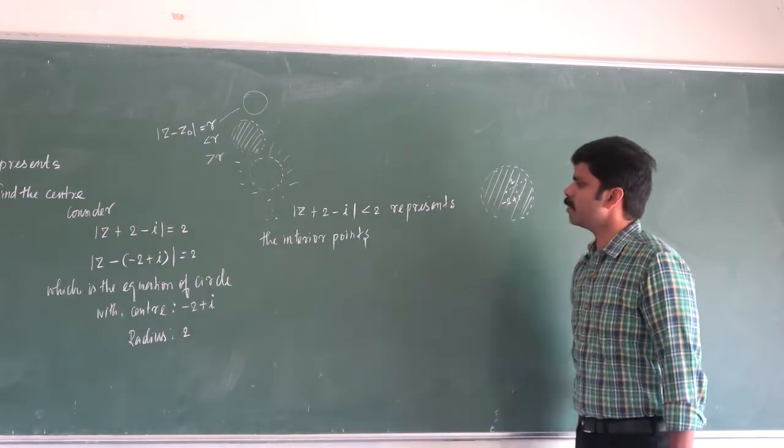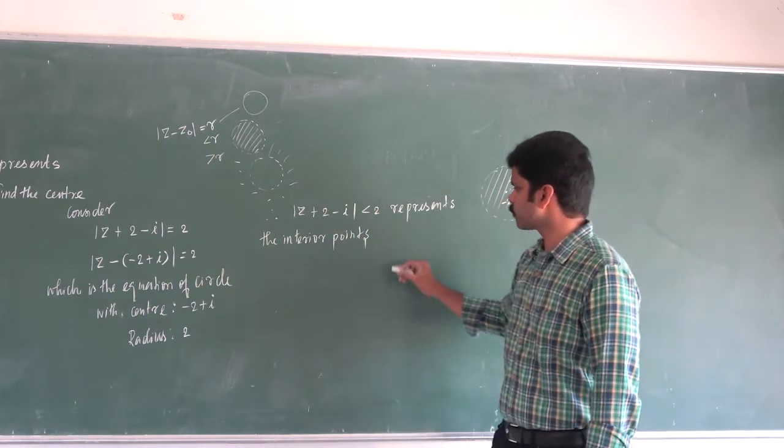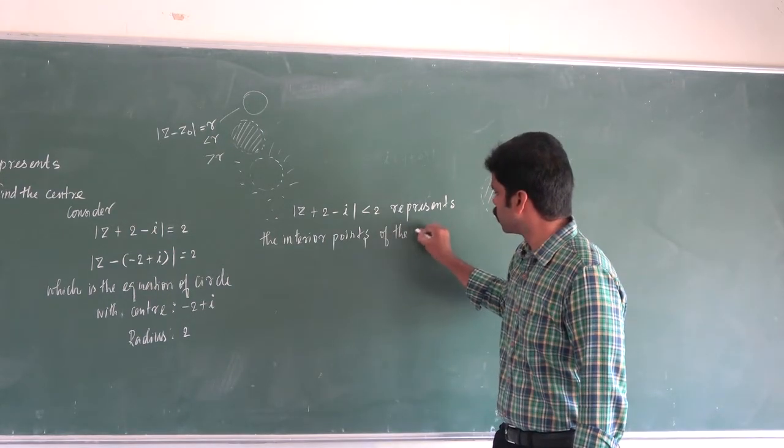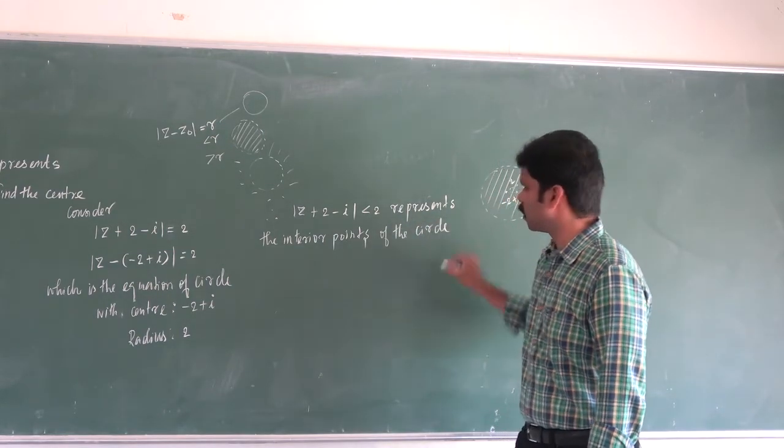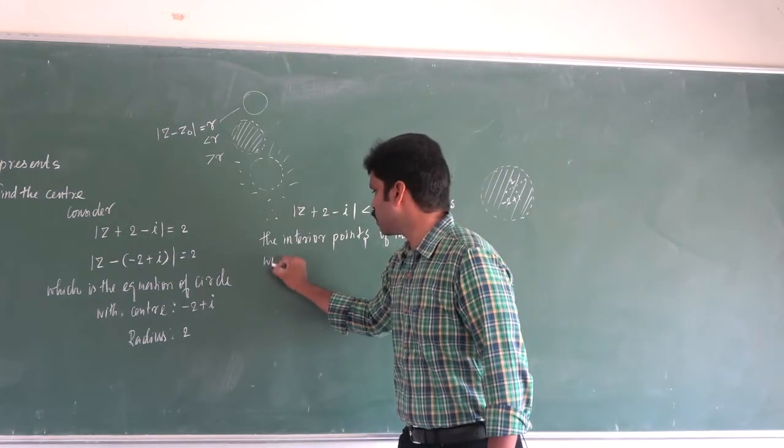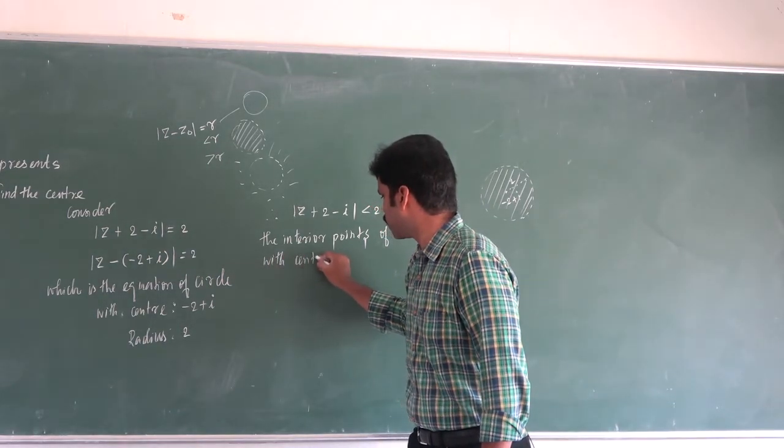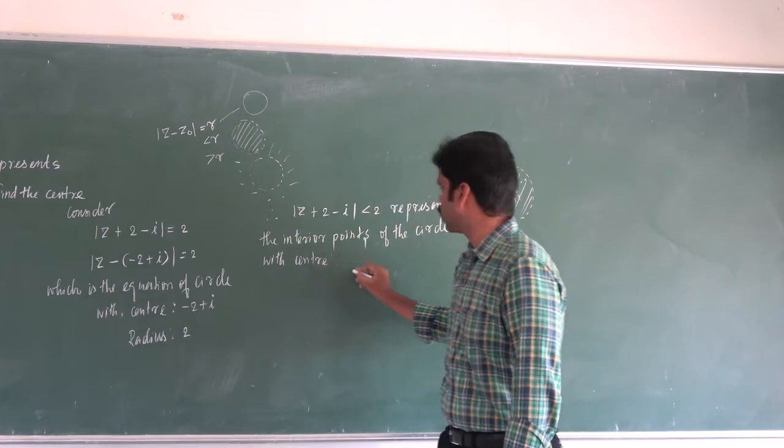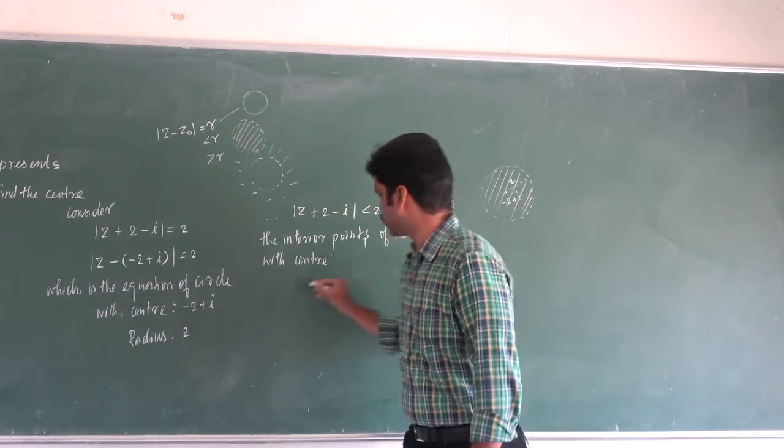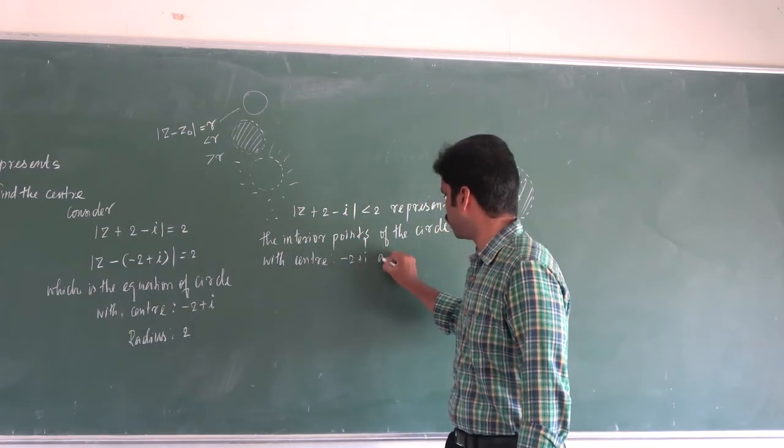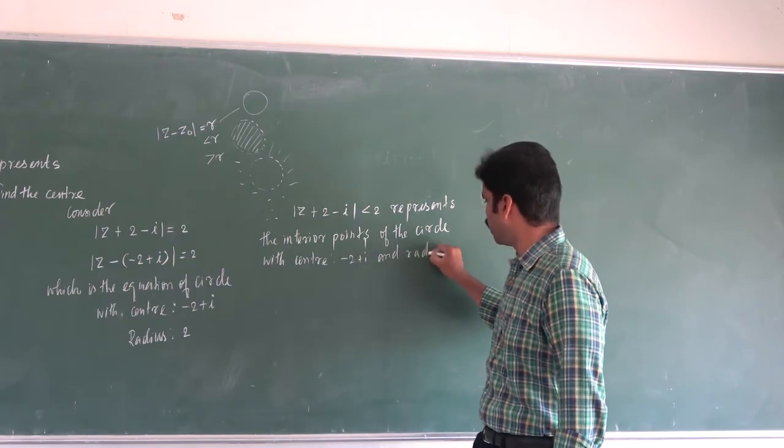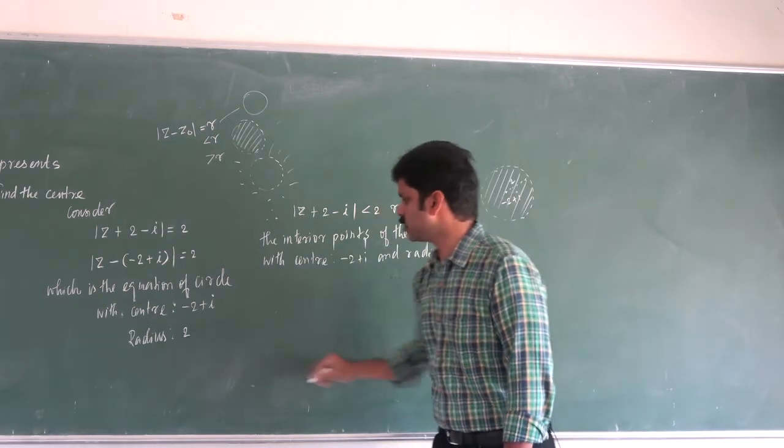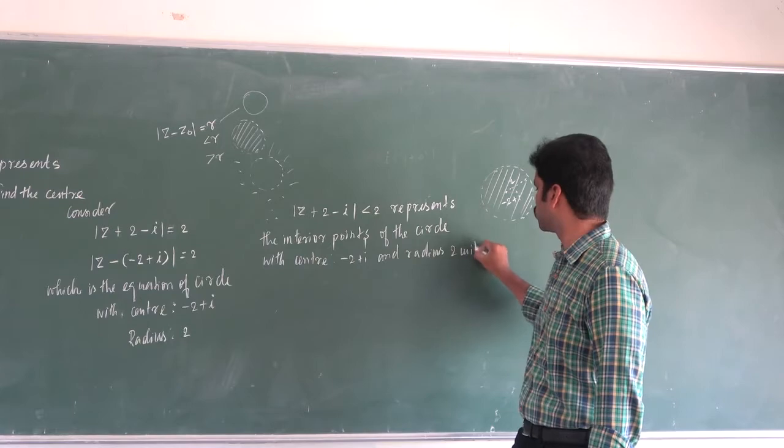It represents the interior points of the circle, of the circle with center minus 2 plus i. And radius, what is the radius? Radius is 2 units.